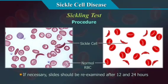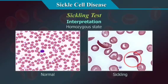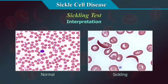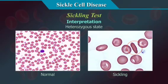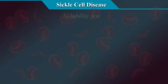If sickling is negative, incubate for another 2 hours and re-examine. If necessary, slides should be re-examined after 12 and 24 hours. Interpretation: In the homozygous state (sickle cell anemia), HBS causes complete sickling of red cells when deoxygenated. In the heterozygous state (sickle cell trait), this phenomenon is less marked and holly leaf forms are more prevalent than the sickled form. All positive cases need to be confirmed by gel electrophoresis or HPLC.